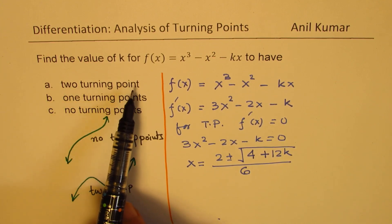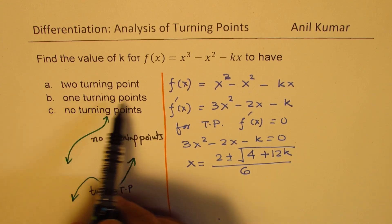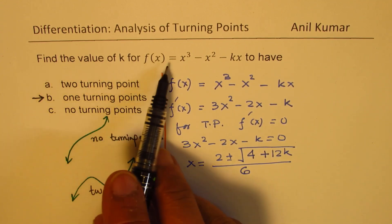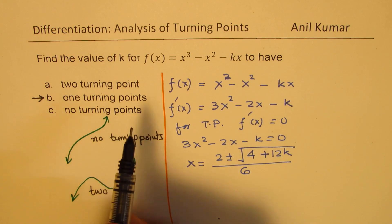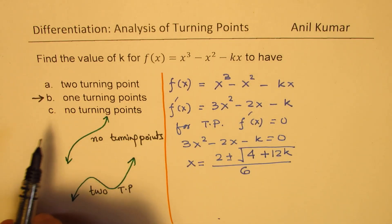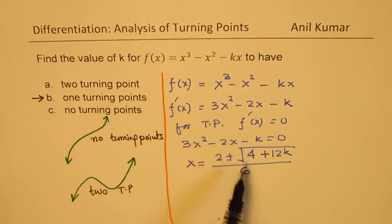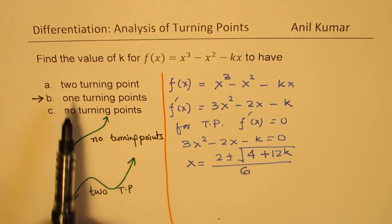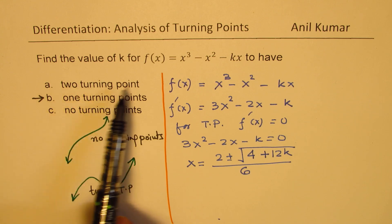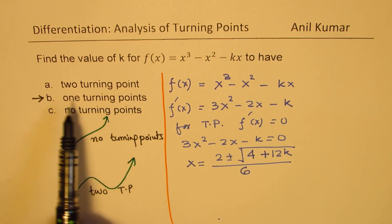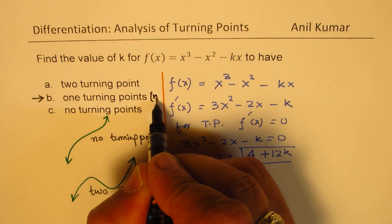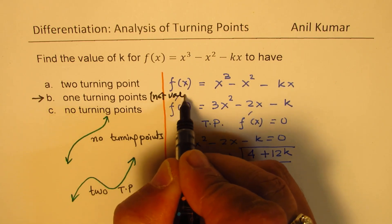Two turning points is possible, but one turning point is not possible for a cubic. So finding the value of k for one turning point is not valid. Whenever we find the solution, we will decide the value of k to have either two turning points or no turning points — one turning point is not possible.